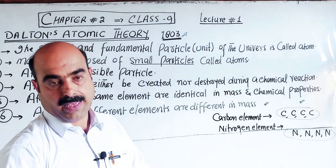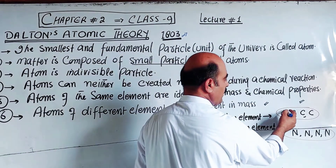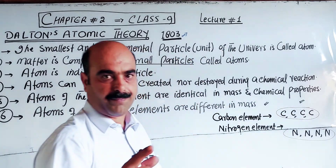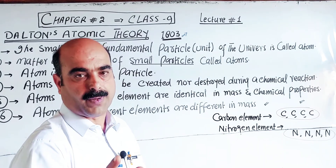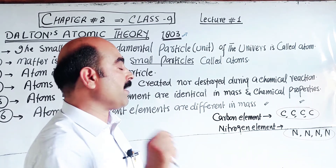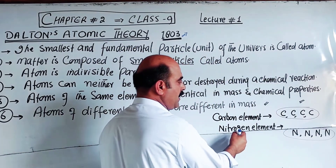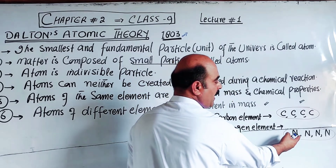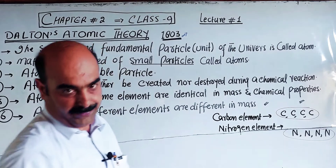For example, carbon has a mass of 12, and all carbon atoms are identical. However, nitrogen atoms are different from carbon atoms. These differences will be further discussed when we cover isotopes and changes made in Dalton's Atomic Theory in a new topic.